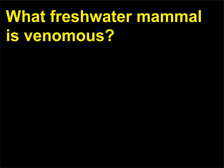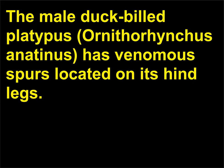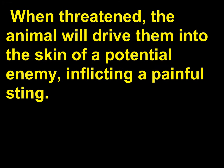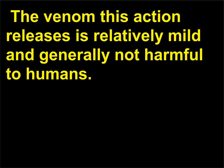What freshwater mammal is venomous? The male duck-billed platypus (Ornithorhynchus anatinus) has venomous spurs located on its hind legs. When threatened, the animal will drive them into the skin of a potential enemy, inflicting a painful sting. The venom released is relatively mild and generally not harmful to humans.